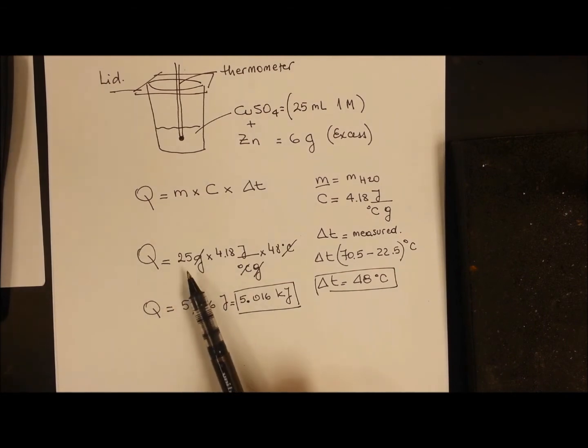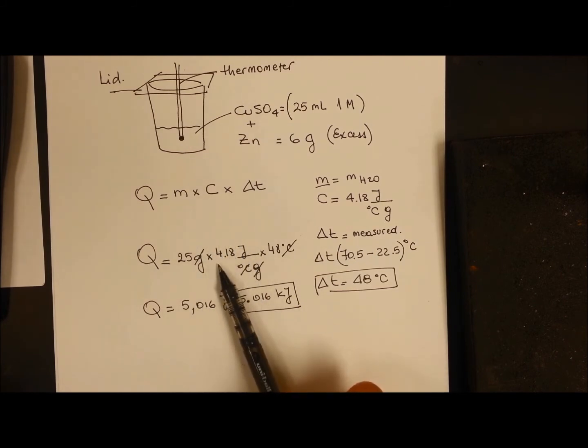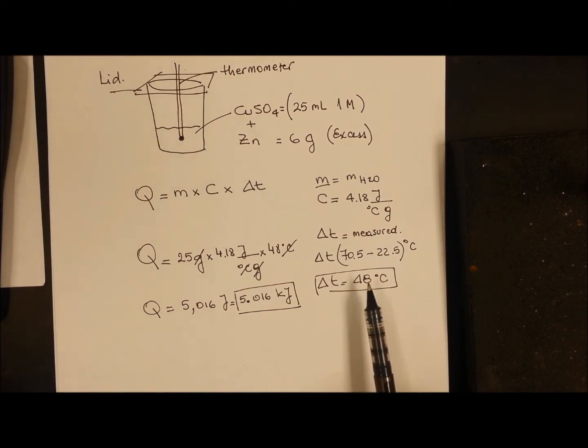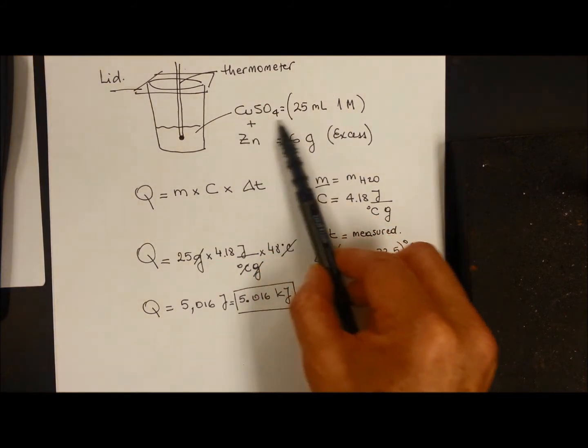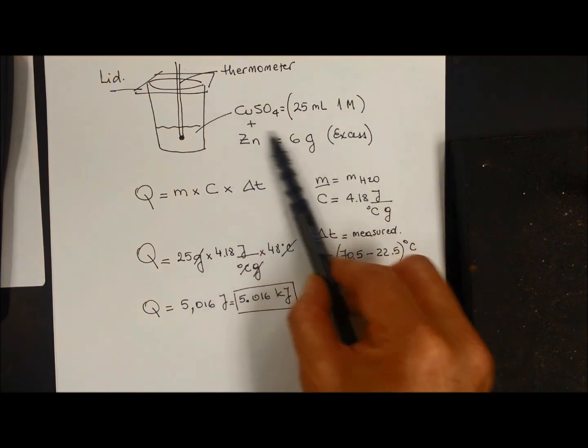After doing the calculation of the amount of water that absorbs the energy, the specific heat, and the delta T that in this case is positive because the temperature of the water is increasing, it's going to give us an amount of heat that is positive and is 5,016 joules or 5.016 kilojoules. That is the amount of heat released by this amount of moles. We need to calculate now how much is for one mole.